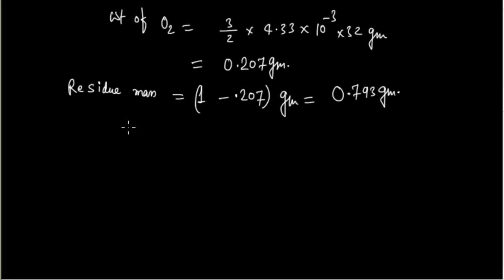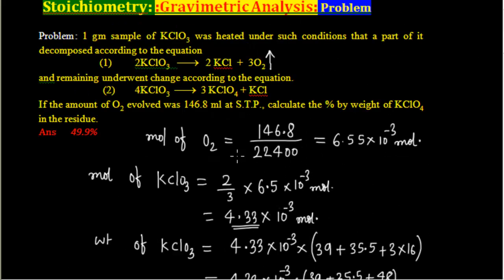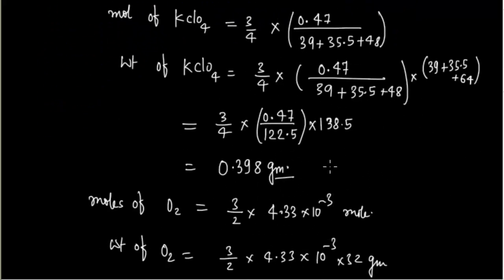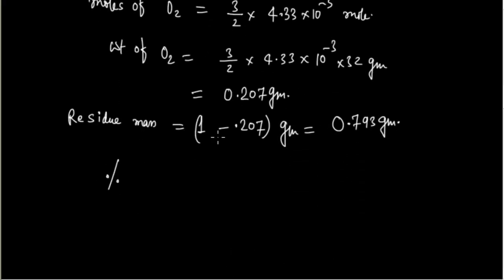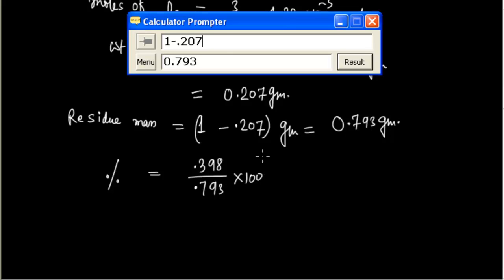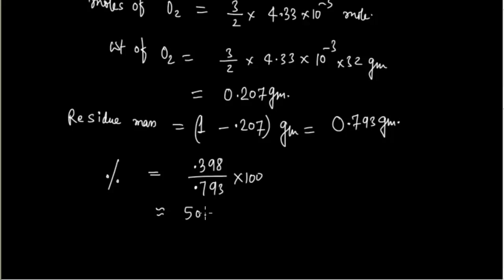Now that we know the residue mass, we can calculate the percentage of KClO₄. Percentage KClO₄ = (weight of KClO₄ ÷ residue mass) × 100 = (0.398 ÷ 0.793) × 100 ≈ 50.18%.